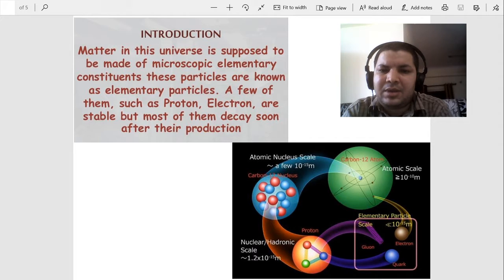For example, if we take carbon-14 atom, it is made of protons and neutrons, and each proton is made up of three quarks. So in this case, quarks are the elementary particles.